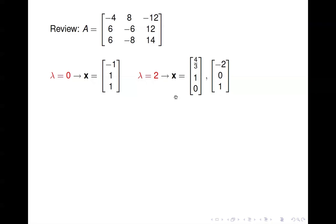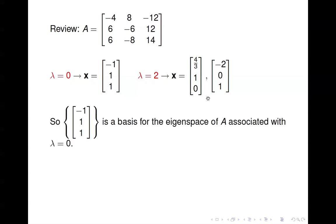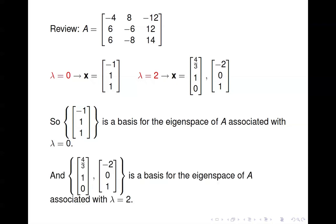To review: the eigenvalues were 0 and 2. For lambda equals 0, we ended up with one eigenvector; for lambda equals 2, we got two linearly independent eigenvectors. Any multiple of the first is an eigenvector for lambda equals 0, and any linear combination of the latter two is an eigenvector for lambda equals 2. The vector (-1, 1, 1) forms a basis for the eigenspace of A associated with lambda equals 0, and the other two vectors form a basis for the eigenspace of A associated with lambda equals 2.